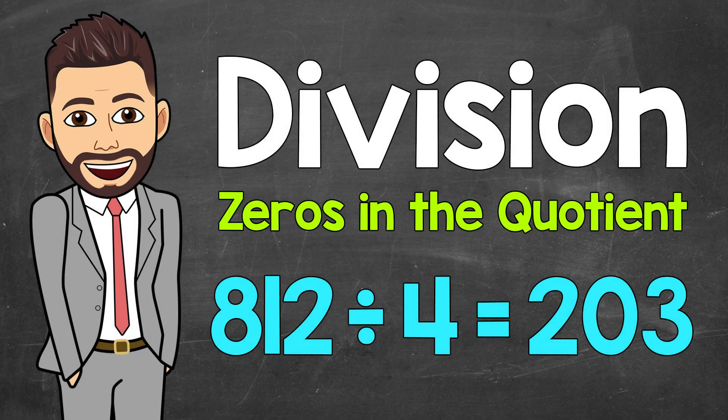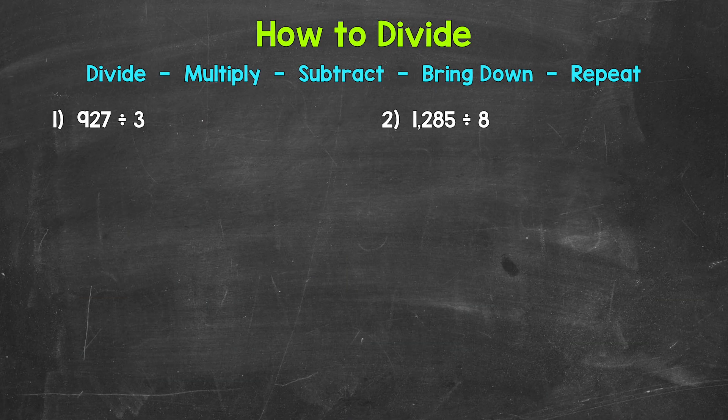Welcome to Math with Mr. J. In this video, I'm going to cover how to solve division problems involving a zero in the quotient — a zero in the answer. This is a type of problem where some common mistakes are made, so we're going to go through a couple of examples to show us what to look out for. We'll go through these two examples together, and then I'll give you two practice problems that you can try on your own.